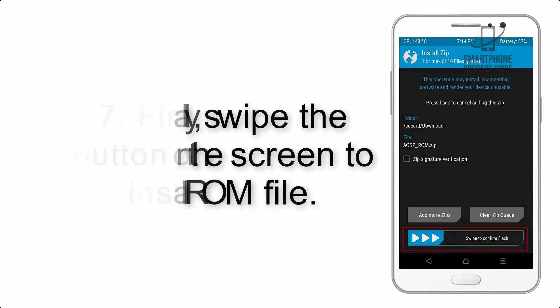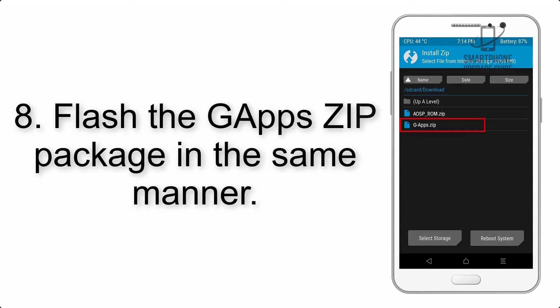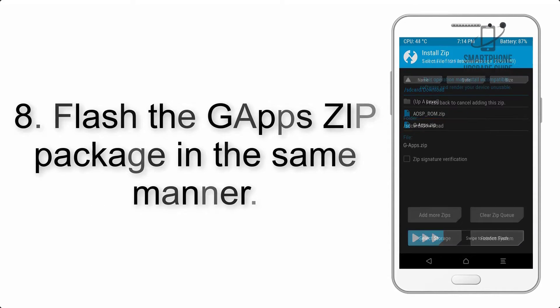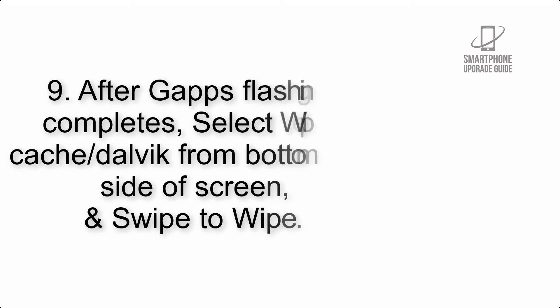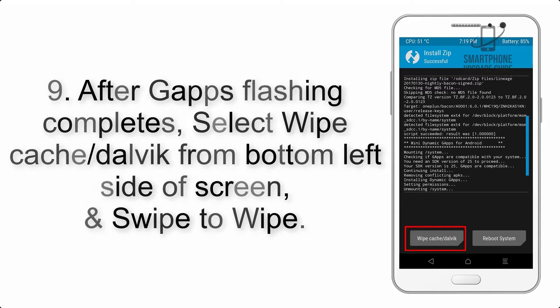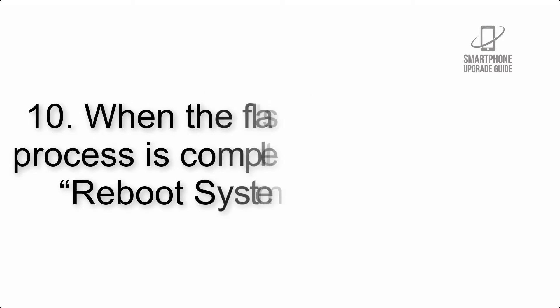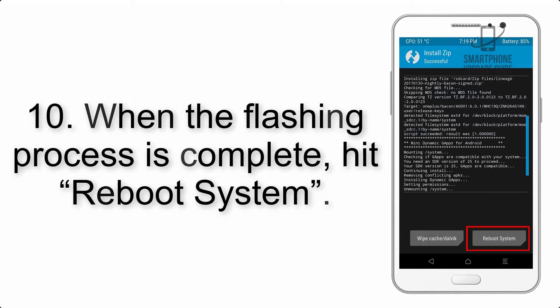Step 8: Flash the GApps zip package in the same manner. Step 9: After GApps flashing completes, select Wipe Cache and Dalvik from the bottom left side of the screen and swipe to wipe. Step 10: When the flashing process is complete, hit Reboot System.